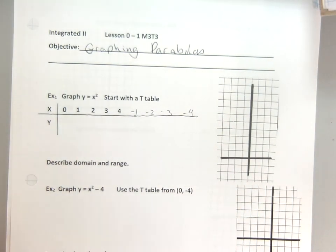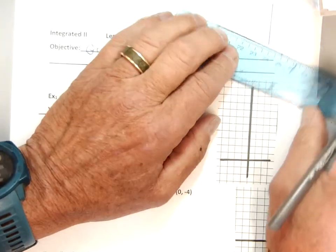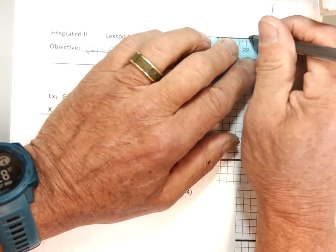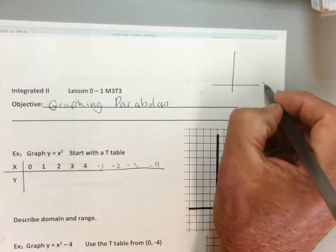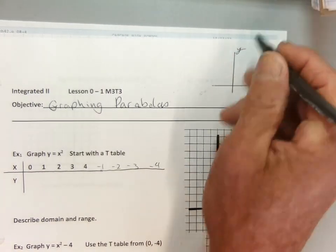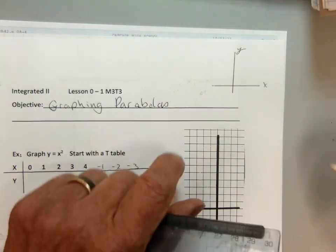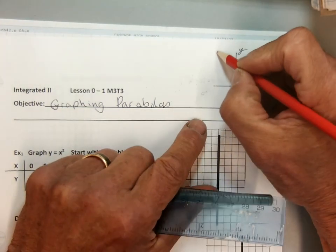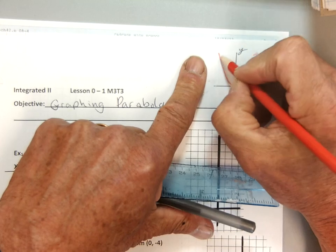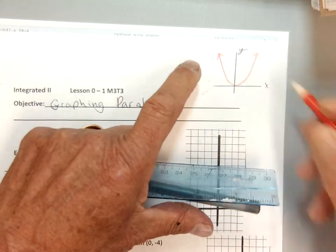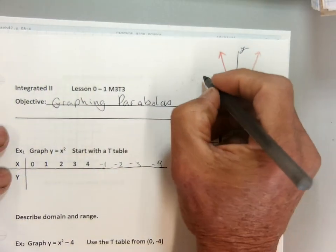So parabolas kind of look like this. I'm just going to give you a basic sketch and then we're going to take a look at making them look much better. Parabolas on an XY axis look like smiley faces or frowny faces. See how it curves like that? It's not straight at all. Parabolas come from X squared equations.